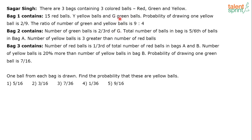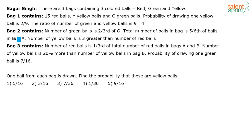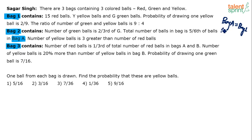Here, g refers to the number of green balls in bag one. So bag two has two-thirds of g green balls. The total number of balls in bag two is five-sixths of the balls in bag one. The number of yellow balls is 3 greater than the number of red balls. Note: the question uses 'bag A' to refer to bag one, 'bag B' to bag two, and 'bag C' to bag three — this appears to be an error in the question.